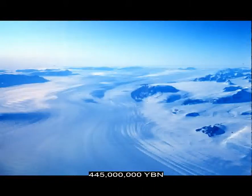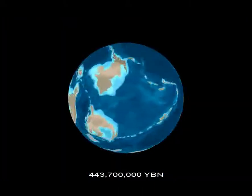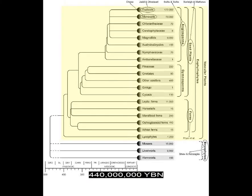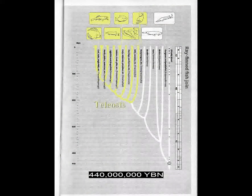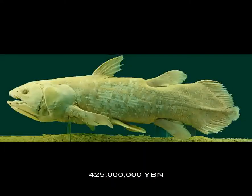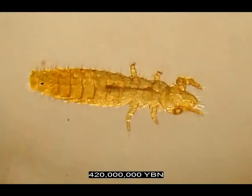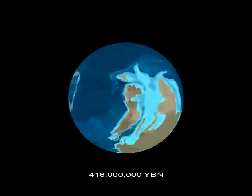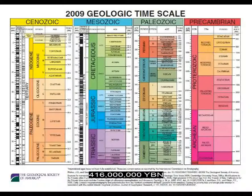Mass extinction caused by ice age. End of the Ordovician and start of the Silurian Period. Vascular plants evolve: Tracheophyta. Jawed fishes: ray-finned fishes evolve. The first lung evolves from the swim bladder in ray-finned fishes. Jawed fishes: lobe-finned fishes evolve — Coelacanths. Arthropods hexapods — arthropods with six legs, three pairs — includes all insects. Lobe-finned fishes: lungfishes. End of the Silurian and start of the Devonian Period.